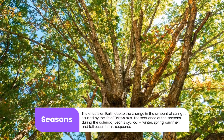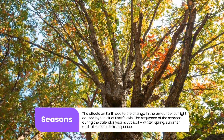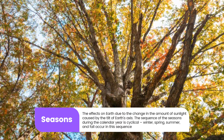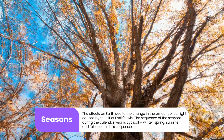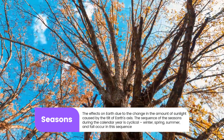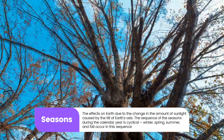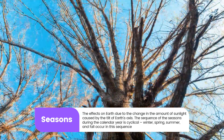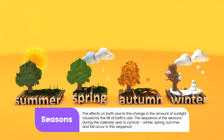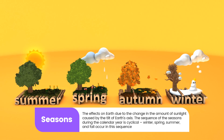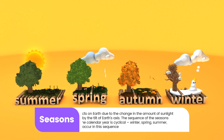23. Seasons: The effects on Earth due to the change in the amount of sunlight caused by the tilt of Earth's axis. The sequence of the seasons during the calendar year is cyclical. Winter, spring, summer and fall occur in this sequence.